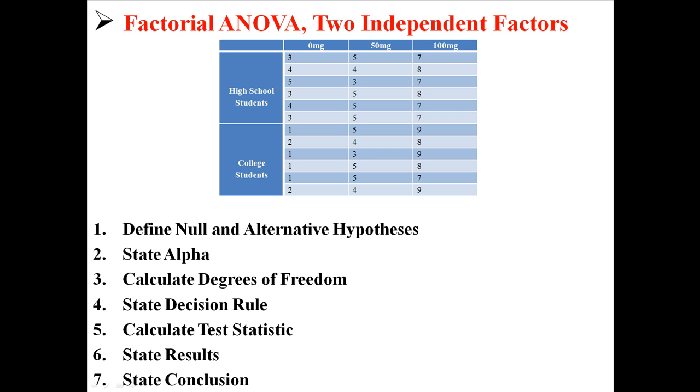We can do the seven steps of hypothesis testing for this factorial ANOVA. Looking at the table, we have two independent variables. We have dosage with three levels: 0, 50, and 100. And we have school with two levels: high school and college. Those are two independent variables, and that's why this is a factorial ANOVA.